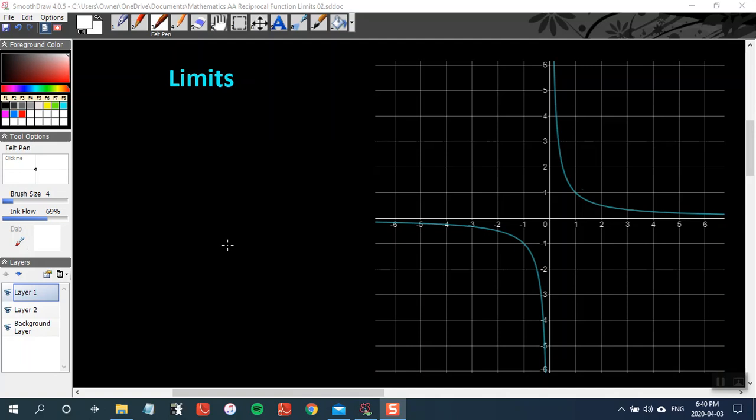Let's look at how limits can be used to describe a function's behavior near its asymptotes. What we have here is f(x) = 1/x, our basic reciprocal function.